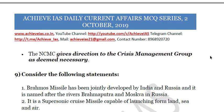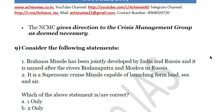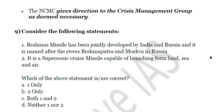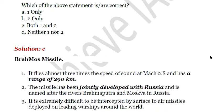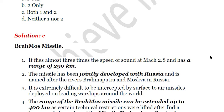The next question: consider the following statements. First, BrahMos missile has been jointly developed by India and Russia, and is named after the rivers Brahmaputra and Moskva in Russia. Second, it is a supersonic cruise missile capable of being launched from land, sea, and air. Both statements are correct — the answer is C. It flies at almost three times the speed of sound at Mach 2.8 and has a range of 290 kilometers.